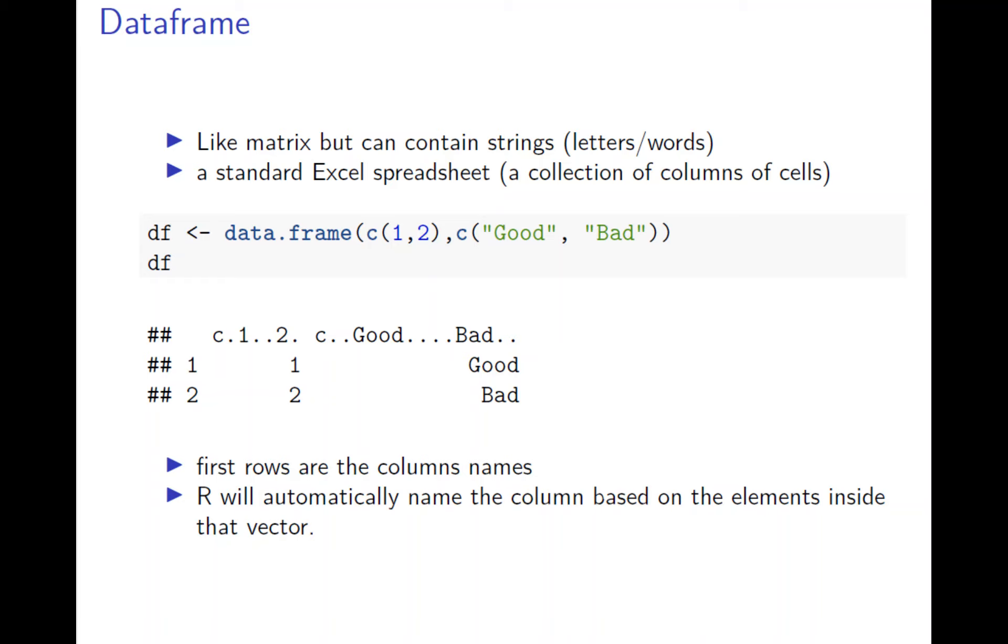A data frame is a list of vectors. It's different from a matrix in that a data frame can allow vectors of different types. For example, we have a data frame with numbers one and two as a numeric vector, and also a character vector with 'good' and 'bad'.